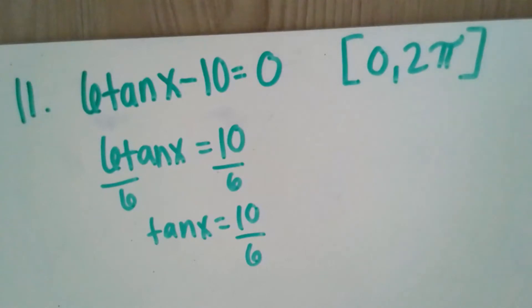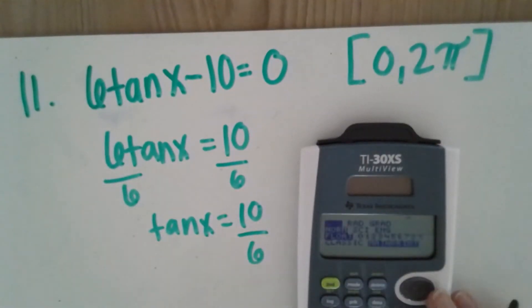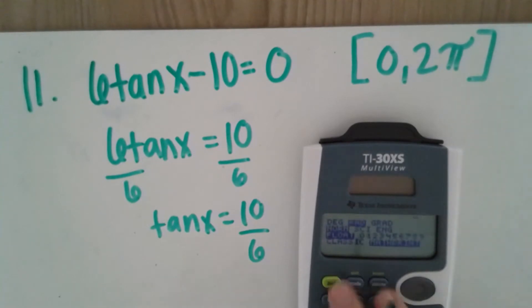And then we're going to do this in our calculator here. Note that we are now in radians, so we're going to put our calculator in radian mode, and we'll do inverse tan of 10/6.